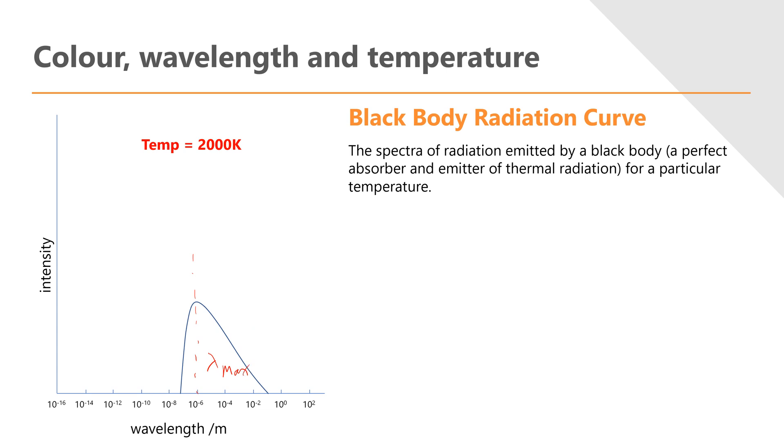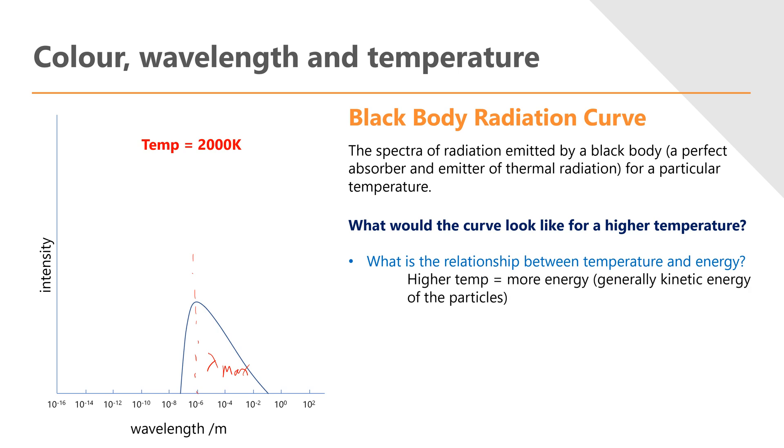So what would that curve look like if I increase the temperature? Well, I need to think what's the relationship between temperature and energy. As I increase the temperature there'll be more energy in the system. And what's the relationship between energy and wavelength? Well, E is equal to hc over lambda - Planck's constant times the speed of light over the wavelength. Or I could rephrase that by saying that energy is inversely proportional to the wavelength.